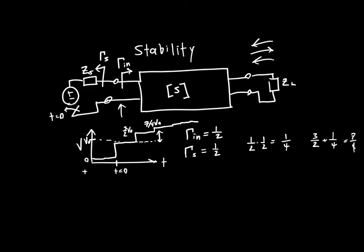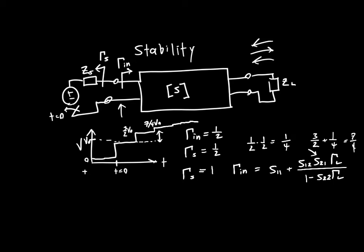But what if gamma_n and gamma_s aren't one-half? What if they're larger? Gamma_s is typically going to be a passive load, so worst-case scenario gamma_s is going to be one. And gamma_n we don't actually know what maximum value it can have, because it depends on s11 — which is generally less than one — but it also depends on s12, s21, and gamma_l. And s21 is our forward transducer gain, and that's often much greater than one. So gamma_n might very well be larger than one.